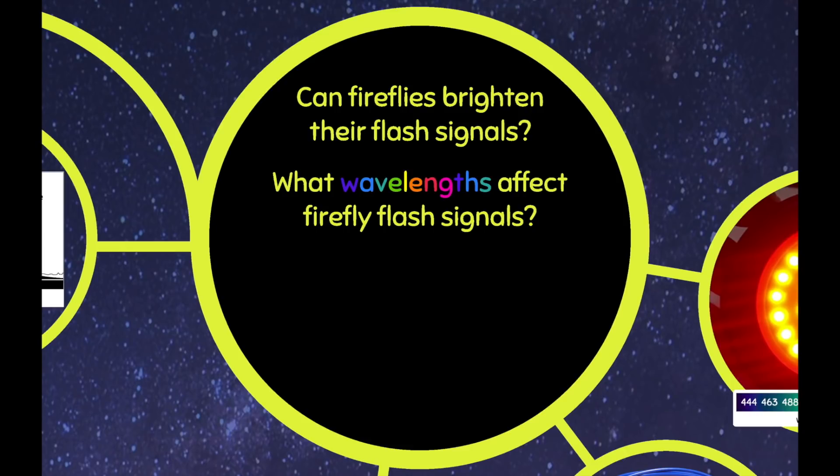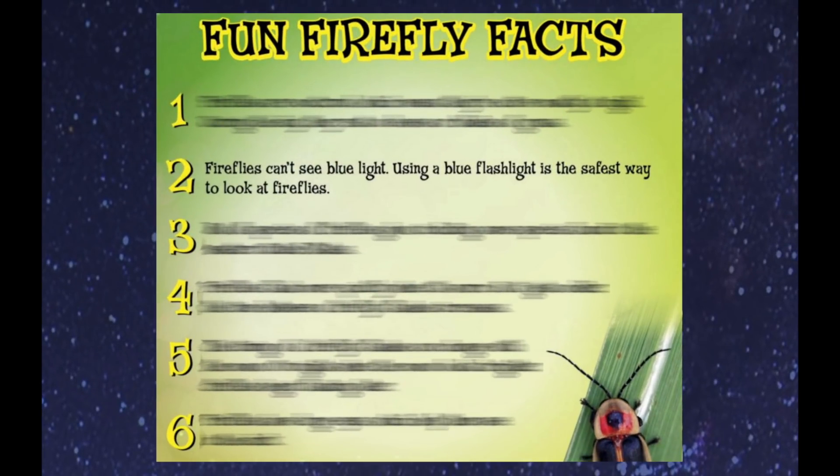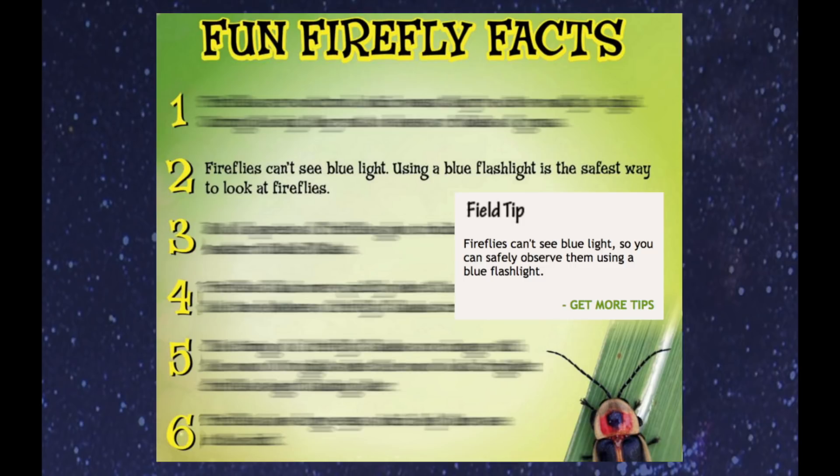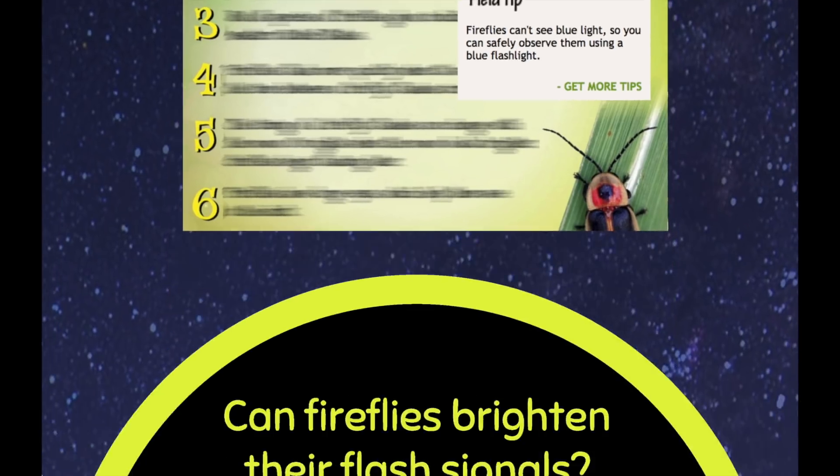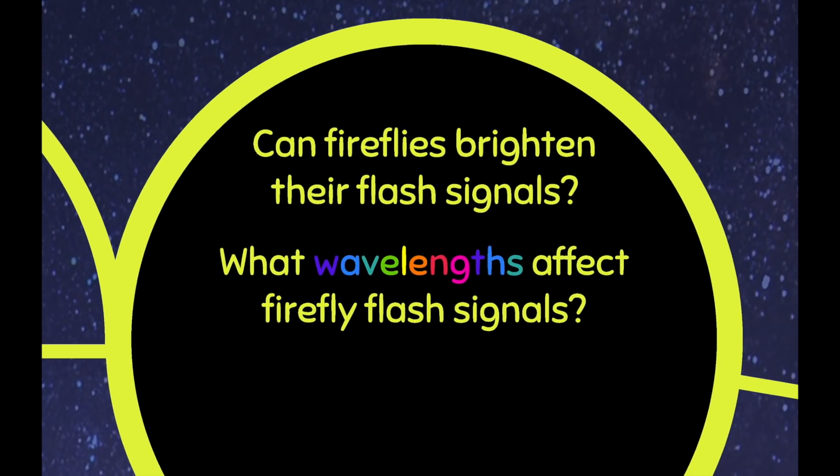Because when I moved to Taiwan, I found out that a lot of people here think fireflies can't see red light. And so parents will give their children little red flashlights to take around to go firefly watching. Whereas in North America, people say that fireflies can't see blue light, and people have blue flashlights to go firefly watching. This tip is even written on the Boston Museum of Science Firefly Watch website. So which one's right? I don't know. But I came up with a plan to investigate.